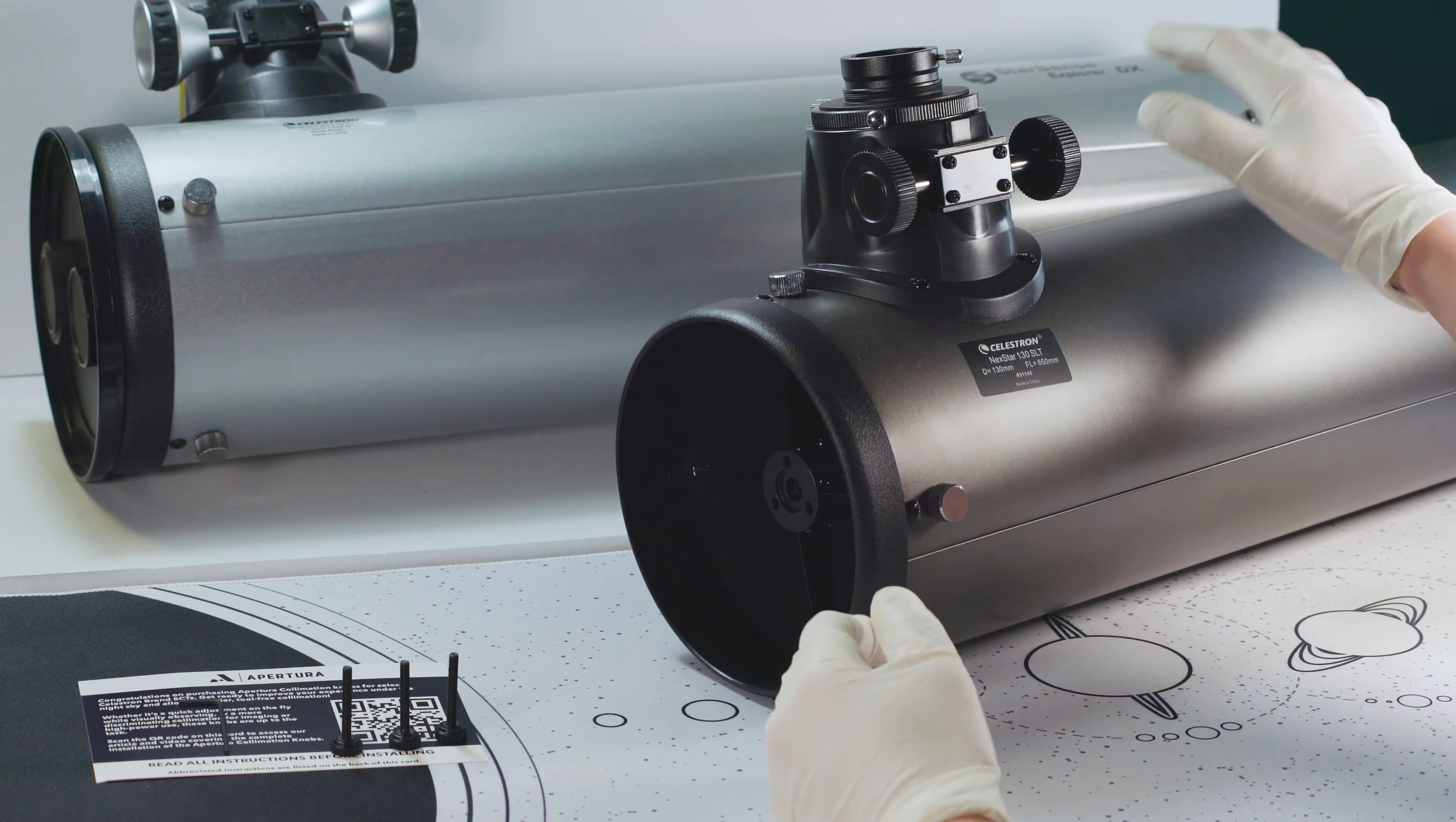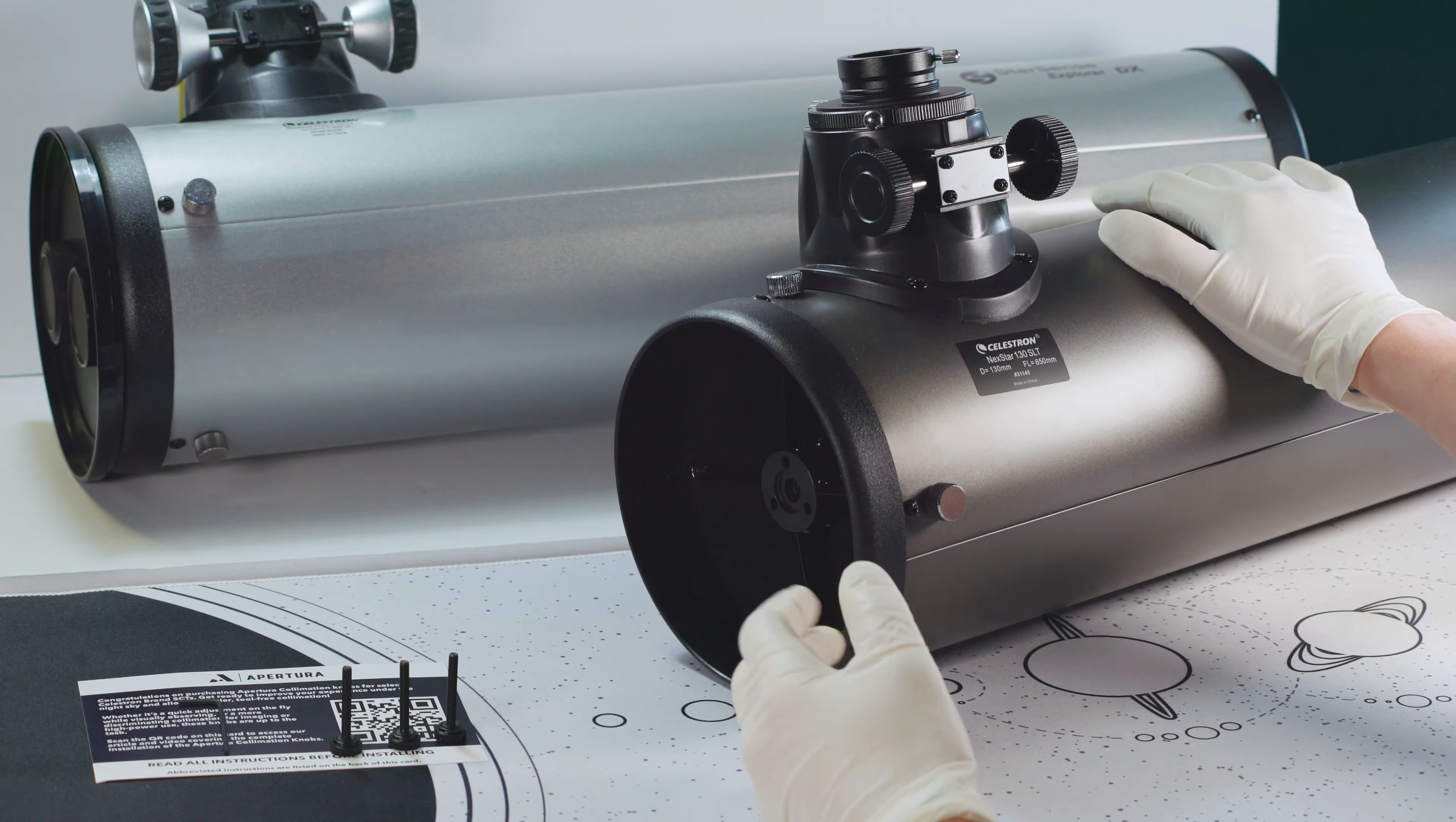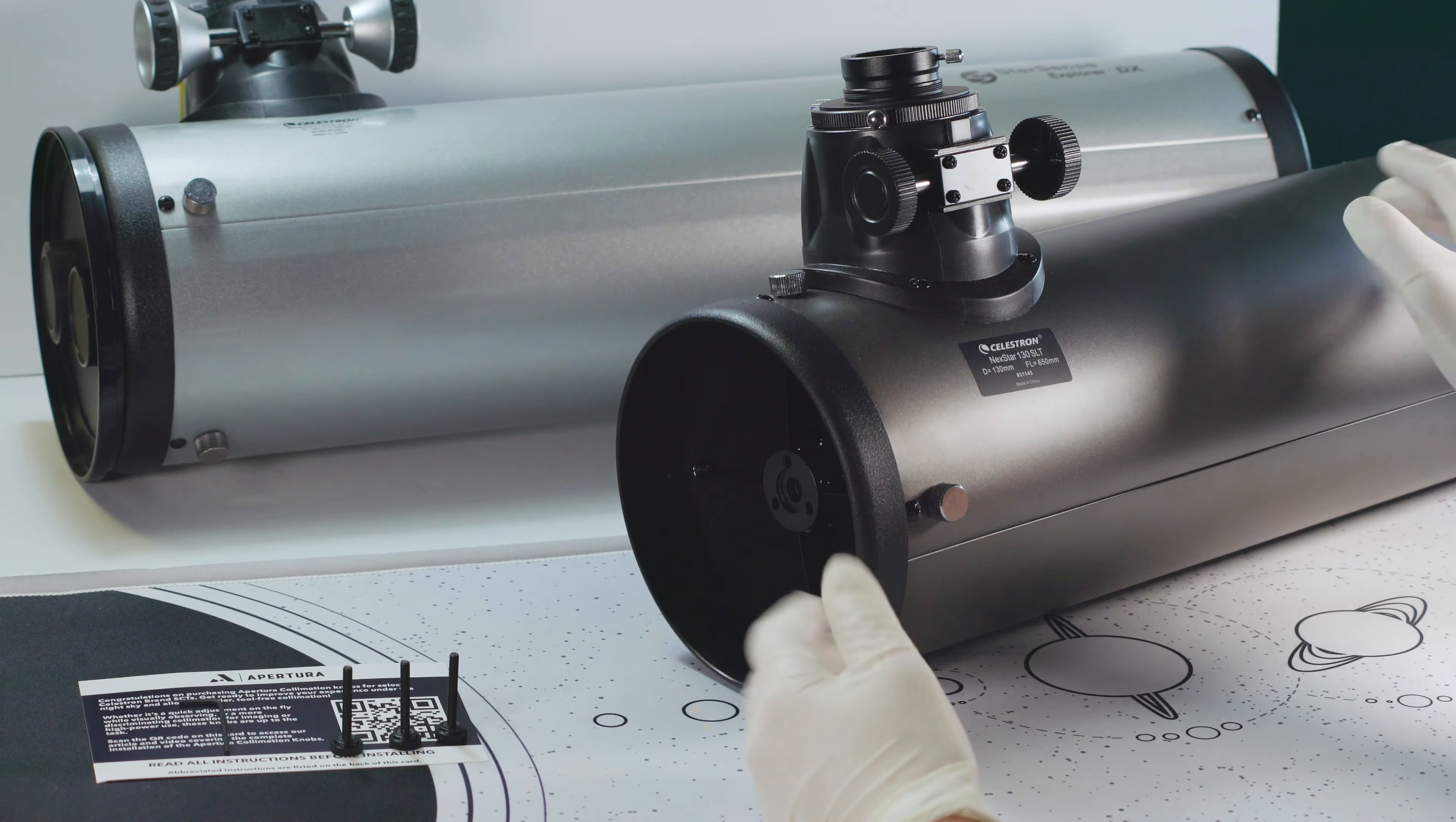Now another way to do this is by leaving the telescope installed in the mount, which will give you a little bit of a more secure platform so that it's less likely to tip over or anything like that. So you can just leave it installed and then just adjust the mount so that it's holding the optical tube as horizontally as possible.